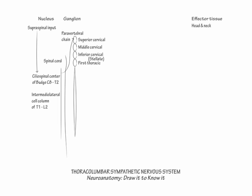Now draw a representative postganglionic sympathetic fiber from the superior cervical ganglion. Show this fiber ascend the common carotid artery and continue up the internal carotid artery into the cranium. A dissection of either the common or internal carotid arteries will cause Horner syndrome.